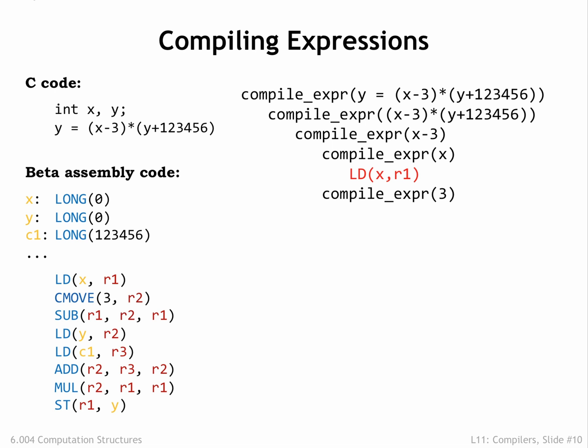Now we need to get the value of the right-hand operand of the subtract into a register. In this case, it's a small constant, so we generate a CMOVE instruction. Now that both operand values are in registers, we return to the subtract template and generate a subtract instruction to do the subtraction.